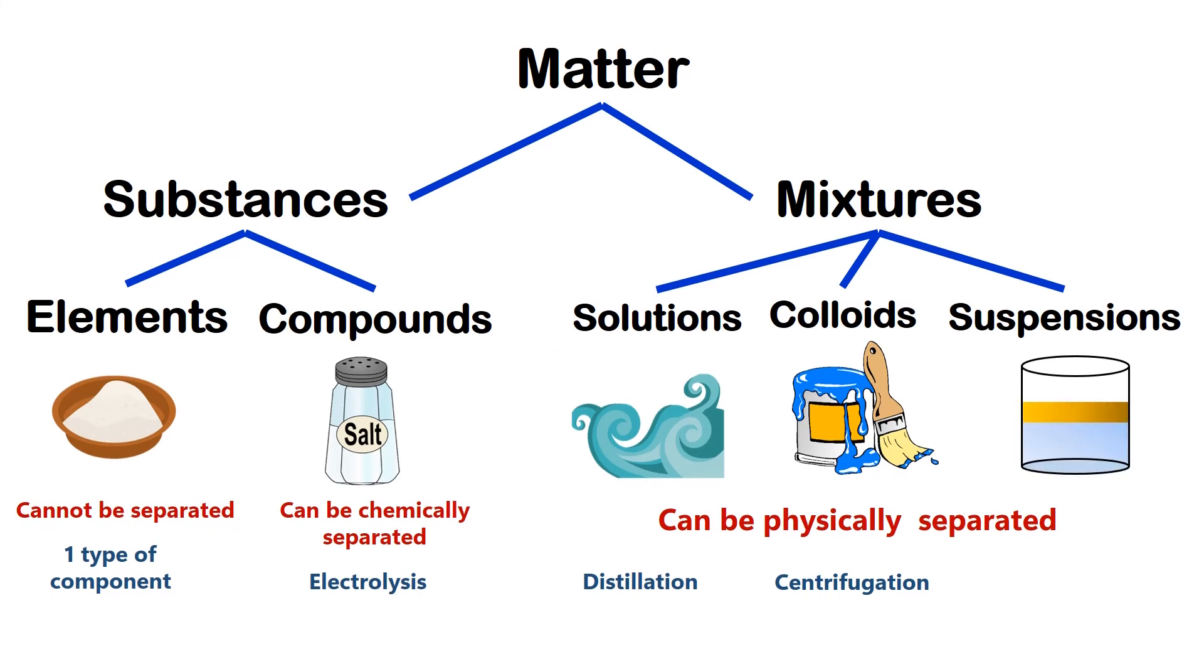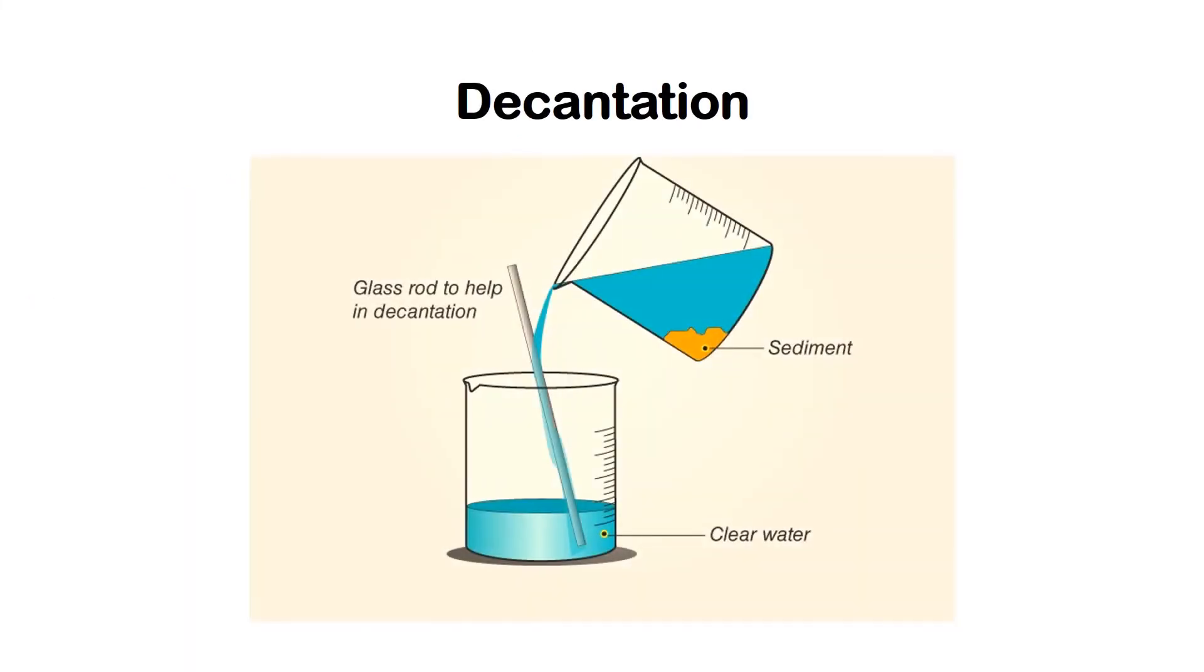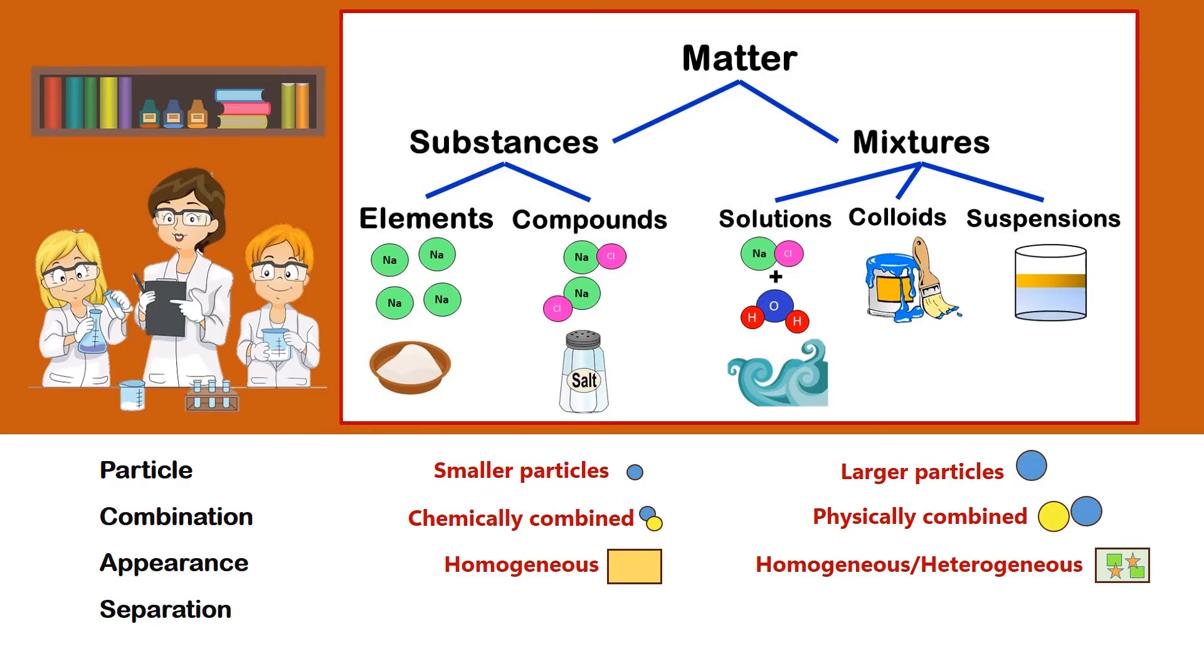And suspensions through decantation, which is the process of separating liquid from solid and other non-mixing liquids by removing the liquid layer at the top from the layer of solid or liquid below. So, only compounds which are pure substances can be separated through chemical means, while all mixtures can be separated through physical means.